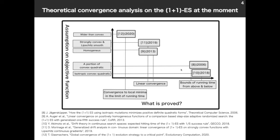Let's see lower right. [8] assumes a portion of convex quadratic function, and [10] assumes isotropic convex quadratic function, and they show an upper bound and lower bound of the (1+1)-ES on such class of functions. [11] assumes strongly convex and Lipschitz smooth function, which is a subset of convex function. And [9] assumes homogeneous function. Here, homogeneous means all level sets have unique shape.